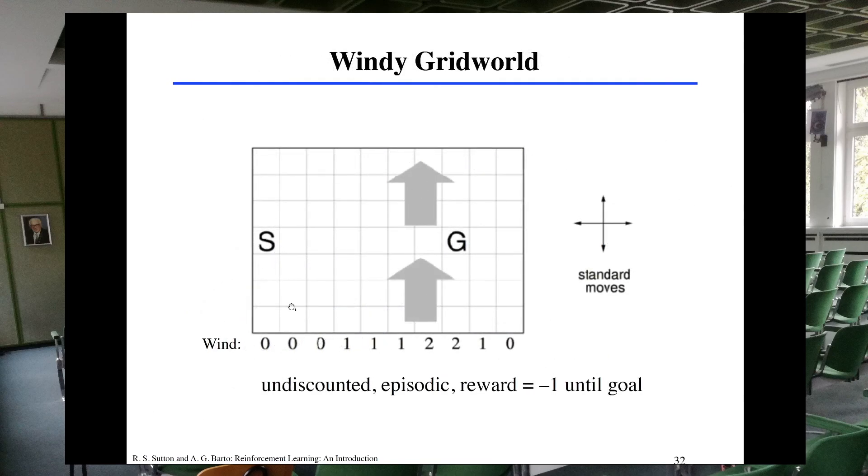So consider this experiment. We consider a grid world. Each of these squares is going to be a state. The agent will start in this S state, this starting state, and it needs to move and get to the goal state, this G state. This is called the windy grid world because every time you move to the next square, according to the wind, this number here, how strong the wind is, you're going to be moved one or two squares up. Like in this case, if you move from here to here, instead of remaining here, you will be moved by the wind one square up.